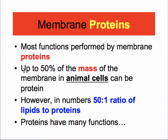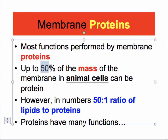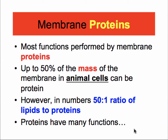Proteins are 50% by mass — the percentage may be different in different cell types. However, even though the proteins are equal in mass, they are not equal in number. Because the lipid molecules are much smaller, there are always more per unit area, so the ratio in animal cells is 50 to 1. Regardless, proteins have many functions, and those functions you have to learn.